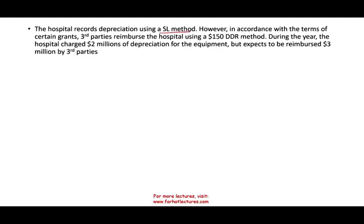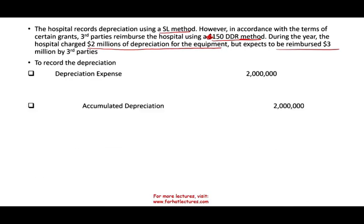The hospital records depreciation using the straight-line method. However, in accordance with the terms of certain third-party reimbursement, the hospital uses the 150% double declining rate. During the year, the hospital charged $2 million of depreciation for the equipment but expects to be reimbursed $3 million. So the way they book their depreciation is straight-line, while the way they get reimbursed for the depreciation is the double declining rate. How does the hospital record depreciation? For them, it's straight-line: debit depreciation expense, credit accumulated depreciation.